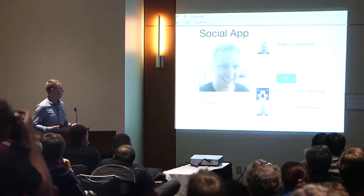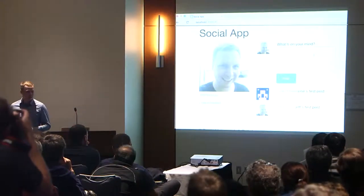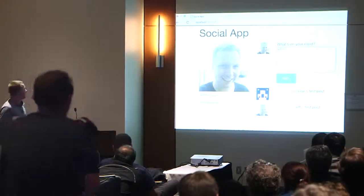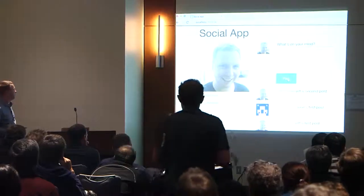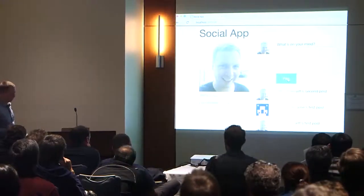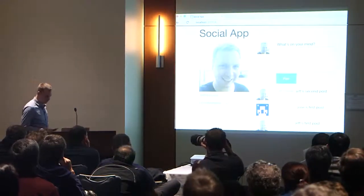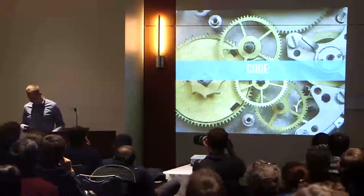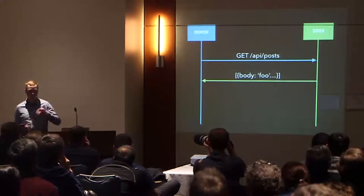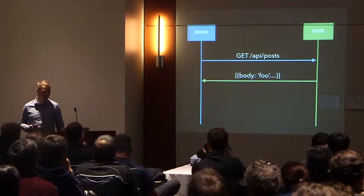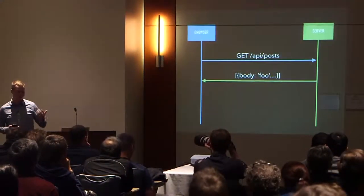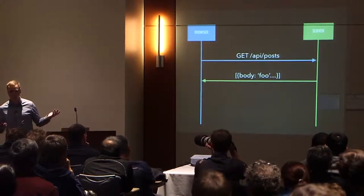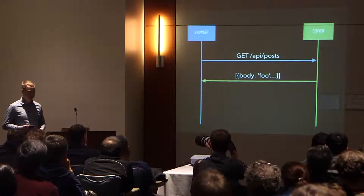So we've got all this stuff together, got our app out, we show it to the boss, and it works great. We can put in a second post, the post shows up on the news feed — everything's great. Let's take a look at the code. I'm going to show a really simple interaction: we're just going to do a GET request to the posts endpoint, and it's going to return an array of all the posts.